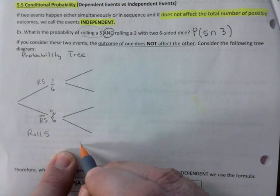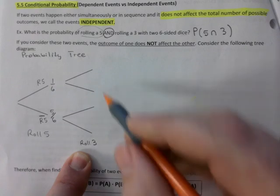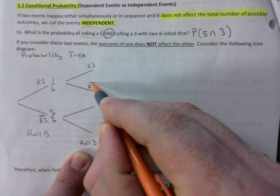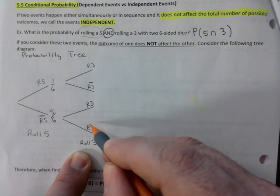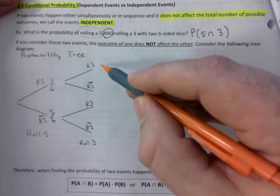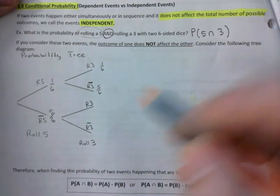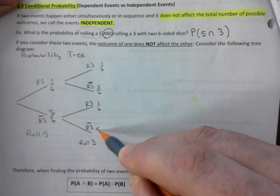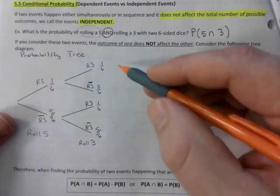Now what's the second event? The second event is roll a three. So you can either roll a three or not roll a three. Roll a three or not roll a three. Those are your options in the second event. So what are the options of rolling a three? One out of six, right. Not rolling a three, five out of six. Again, rolling a three, one out of six. Not rolling a three, five out of six.